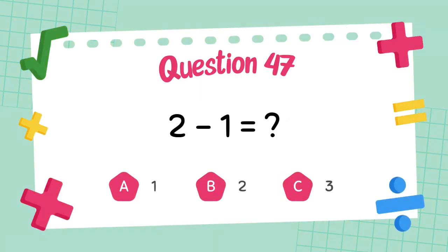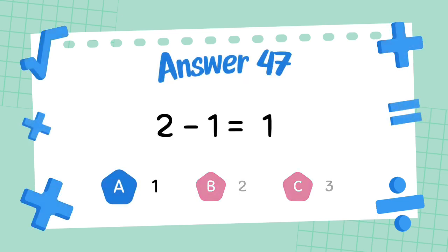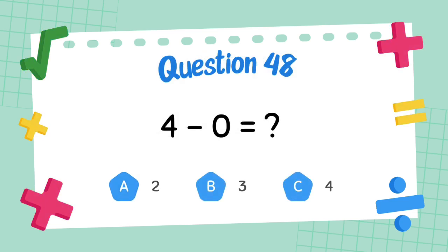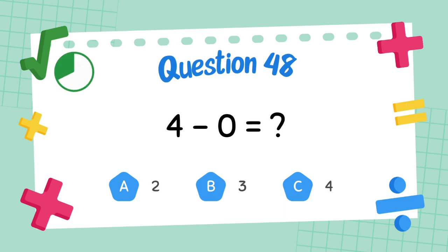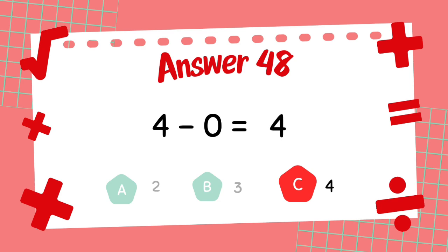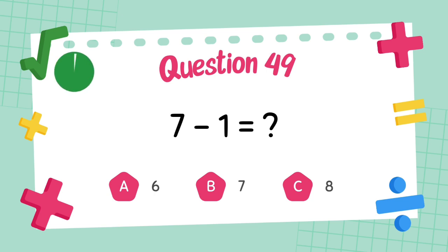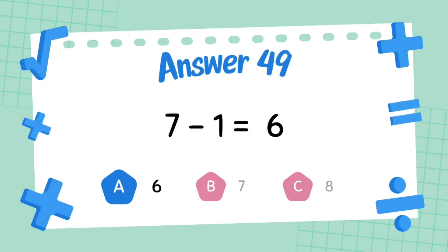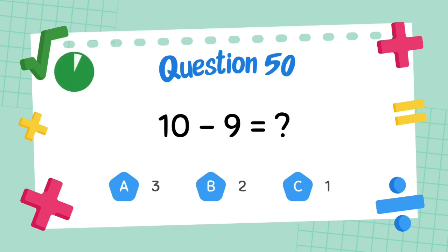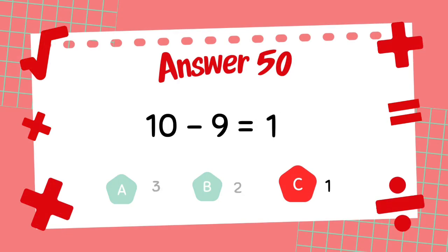What is 2 minus 1? The answer is 1. What is 4 minus 0? The answer is 4. What is 7 minus 1? The answer is 6. What is 10 minus 9? The answer is 1.